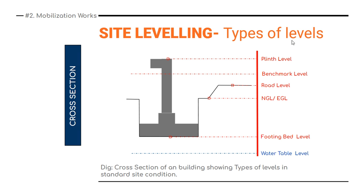Here are the types of levels. The plinth level is the top level of the plinth beam. Above that is the floor finish level, which is 50 mm above the plinth beam top level. The next is the benchmark level, and then there is the road level. Below that is the NGL or EGL — natural ground level or existing ground level.